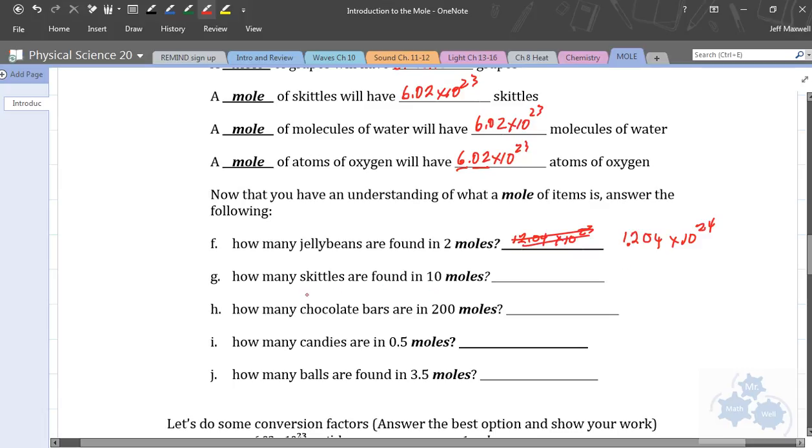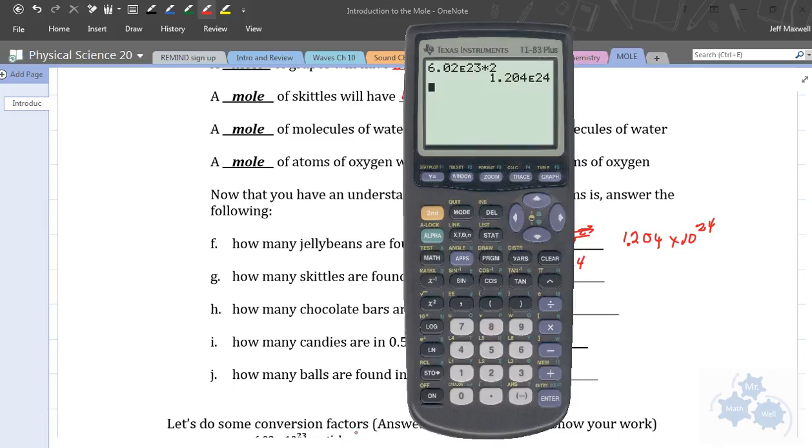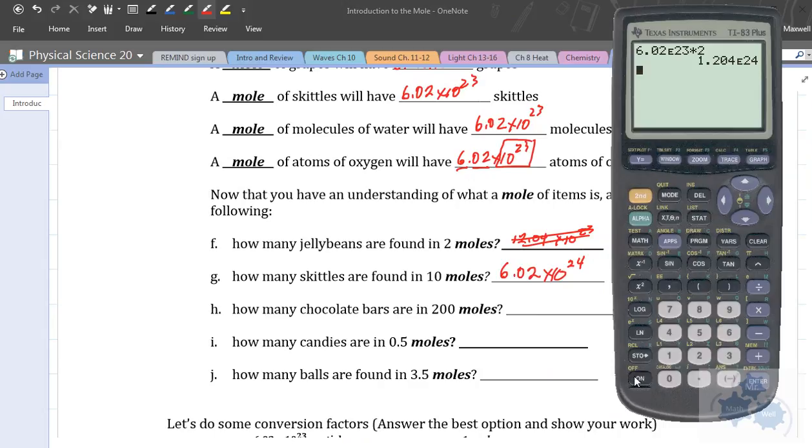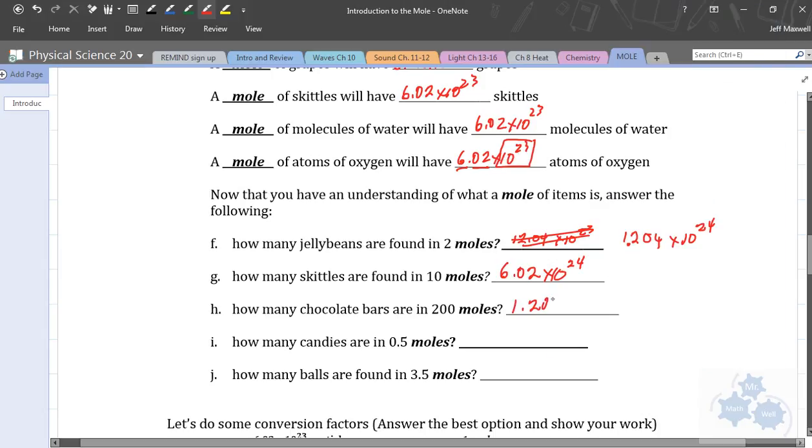Okay, 10 moles. 10 moles has how many Skittles in it? If we're going to multiply this by 10, the neat part about this is that this is powers of 10. So, if we have one more power of 10, we actually have the same number when we just change this one right here to 24. Of course, you could do that on your calculator as well. I'm going to do the next one on the calculator. So 200 moles, 6.02 times 10 to the power of 23 times 200. Your calculator should give you the answer in scientific notation. 1.204 times 10 to the 26.